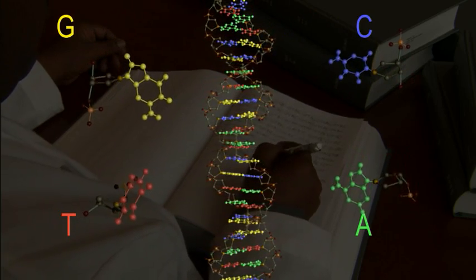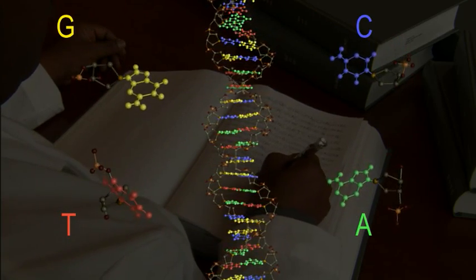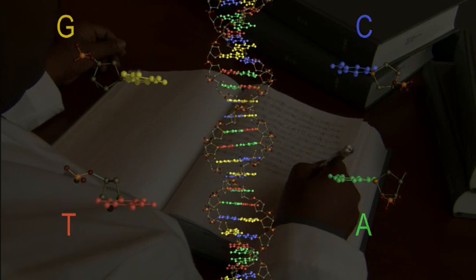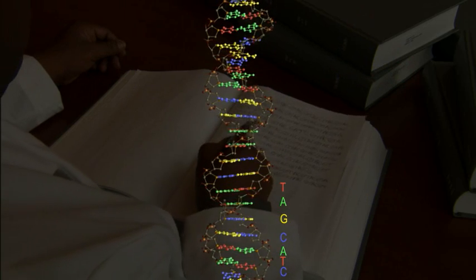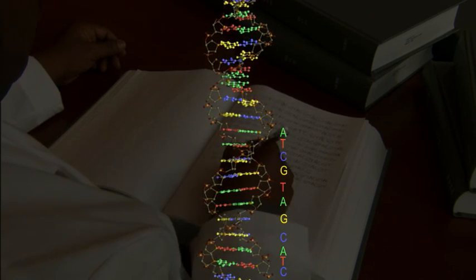So if you know one side of the step on the ladder, you automatically know the other side as well. Step by step, and three billion letters long, this is the formula for a human being.